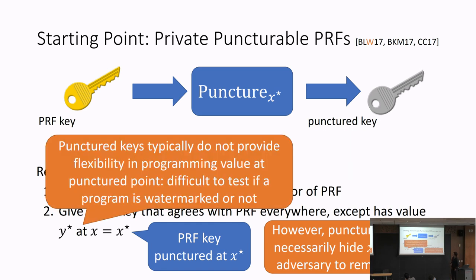The second problem is that punctured keys do not offer much flexibility in setting the value at the punctured point. Our verification algorithm evaluates the watermarked key at x* and checks whether the value is y*. But if we have no flexibility in choosing the value obtained when the punctured key evaluates at the punctured point, there's no way of implementing this framework generically using a puncturable PRF.